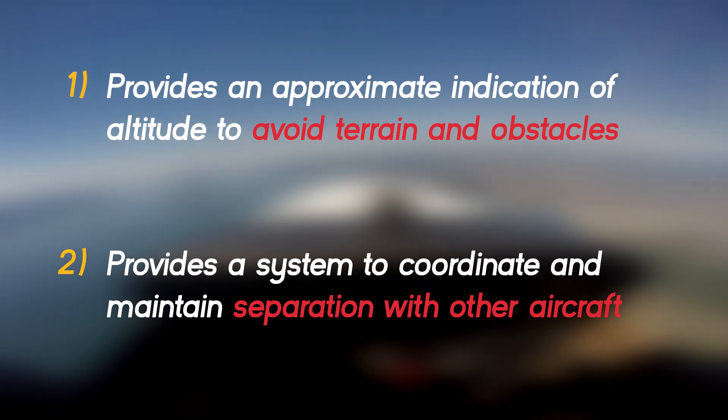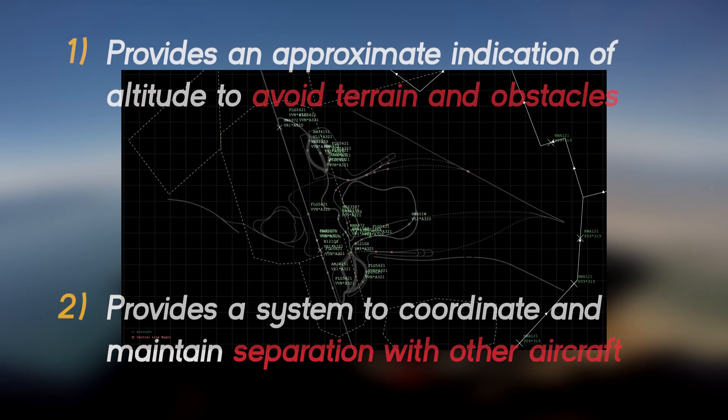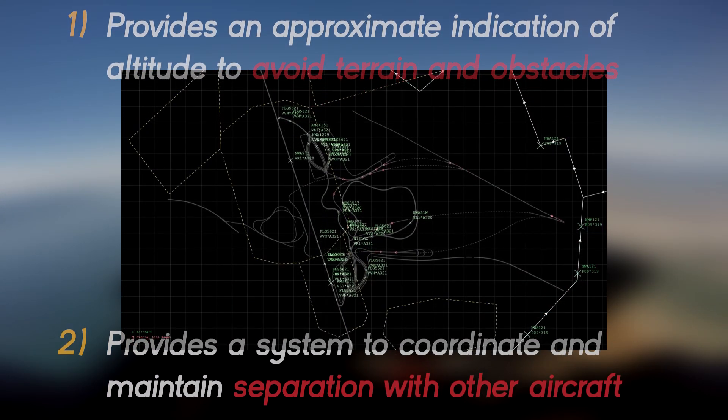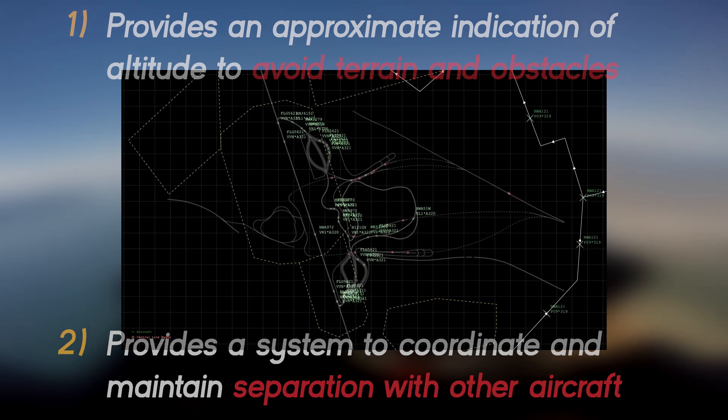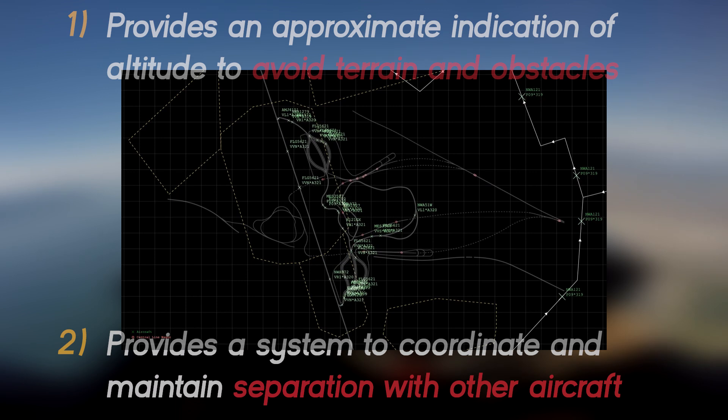Despite the errors induced by non-standard temperature and pressure, we can be assured that all other aircraft will be affected in the same way. These errors lessen our ability to find our absolute altitude, but remain very effective at indicating our altitude relative to other aircraft in the area.